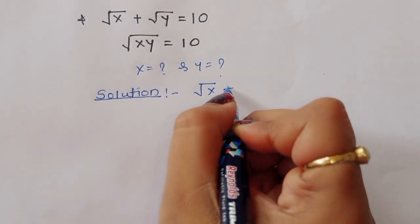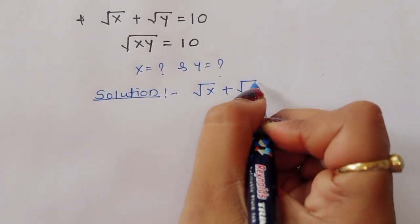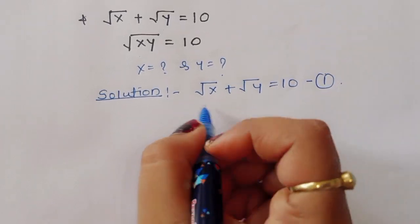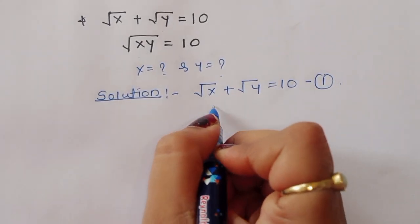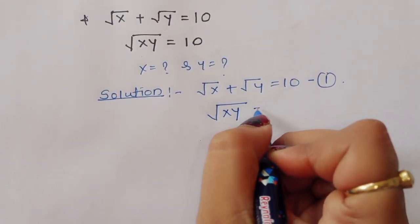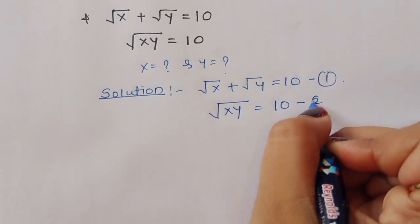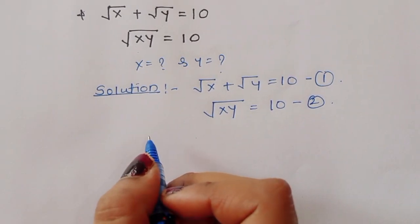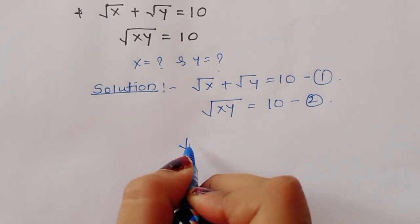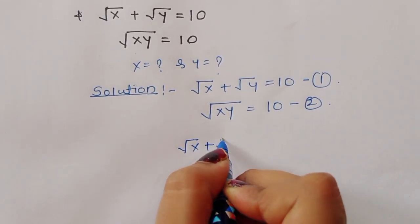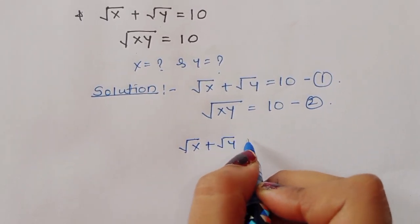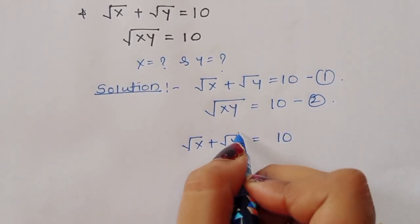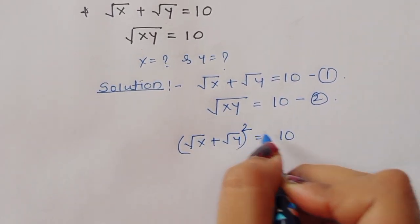Square root of x plus square root of y is equal to 10 — this is equation number 1. Square root of xy is equal to 10 — this is equation number 2. Now taking the first equation, square root of x plus square root of y equals 10, and squaring both sides.